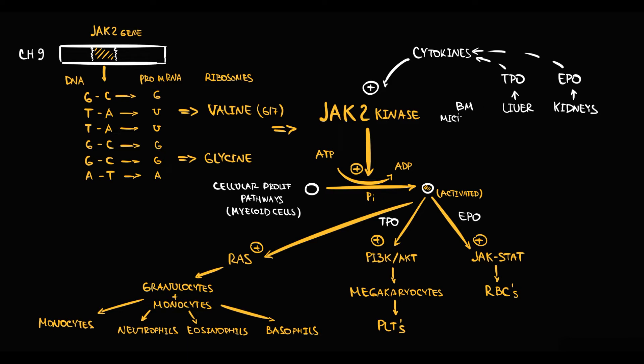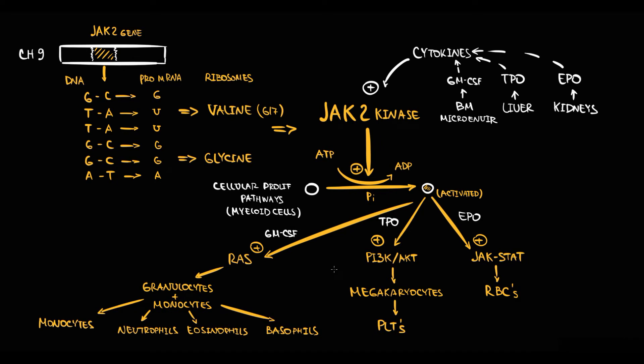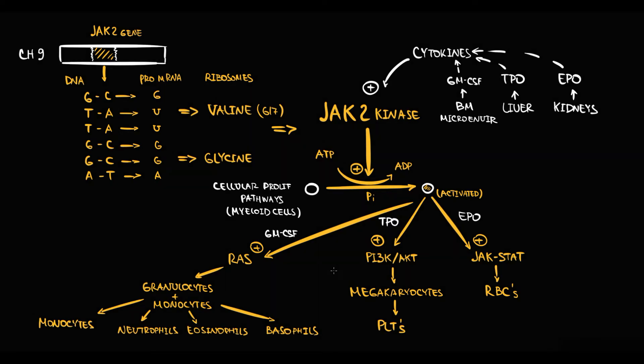Bone marrow microenvironment, by secretion of granulocyte-macrophage colony-stimulating factor, forces JAK2 kinase to activate RAS pathway that causes increase in production of granulocytes and monocytes. Because organs that regulate blood cell count cannot act directly, they secrete cytokines. Cytokines activate JAK2 kinase and in turn JAK2 kinase stimulates proliferation rate.